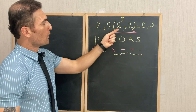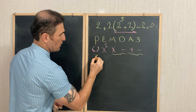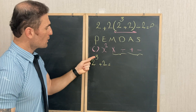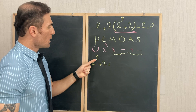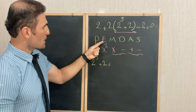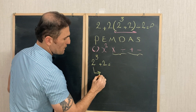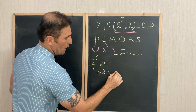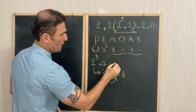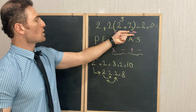We need to find the value of 2³ + 2. Inside the parenthesis we have two operations: exponent and addition. Exponent comes first. 2³ = 2 × 2 × 2 = 8. Then 8 + 2 = 10. So the value of the expression inside the parenthesis is 10.